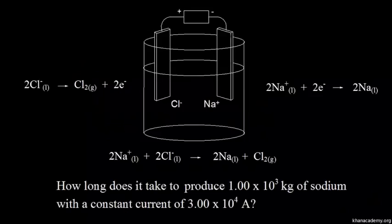Here's a simplified diagram for the electrolysis of molten sodium chloride. If you melt solid sodium chloride, you get molten sodium chloride — you get sodium ions and liquid chloride anions. So that's what we have here: sodium ions and chloride anions.